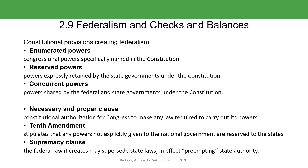Powers granted to the states are called reserved powers. Powers shared by the state and federal governments are called concurrent powers. For example, under concurrent powers, both the state and the federal government can tax. The Necessary and Proper Clause basically gives Congress the authority to make any law that is required to carry out its powers.